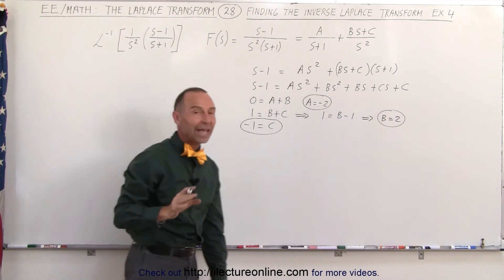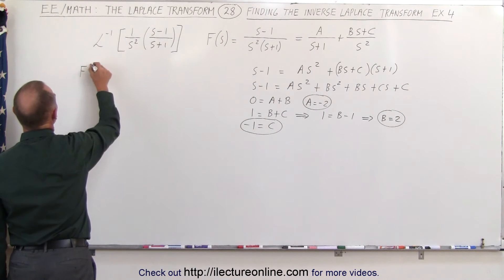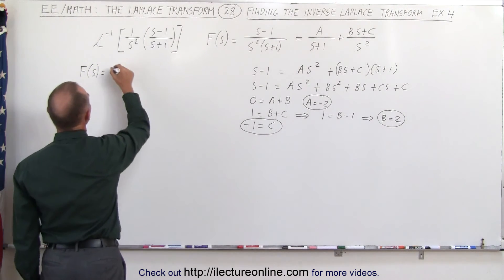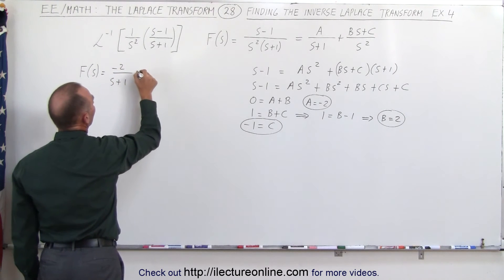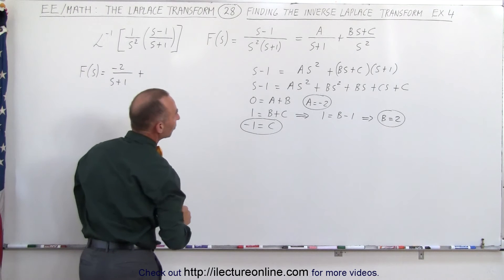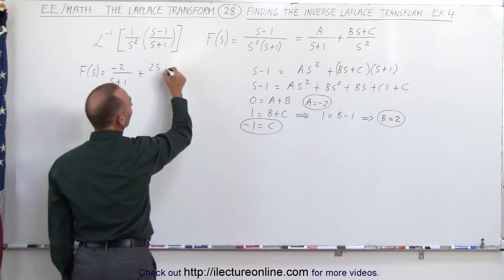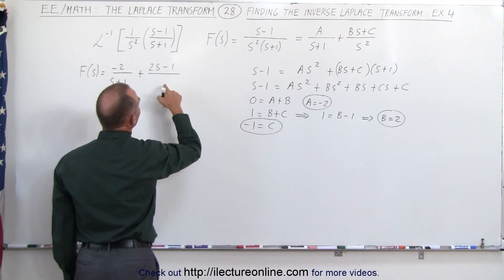Now we have the values A, B, and C, which means that our function can now be written as A, which is minus two over s plus one, plus B s plus C. Now B is two, that means two s plus C, which is minus one, divided by s squared.